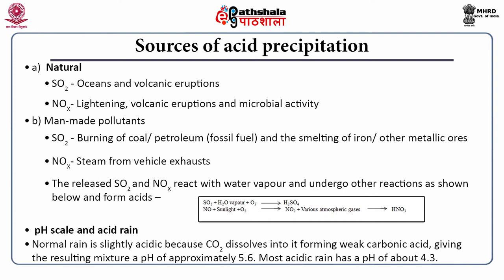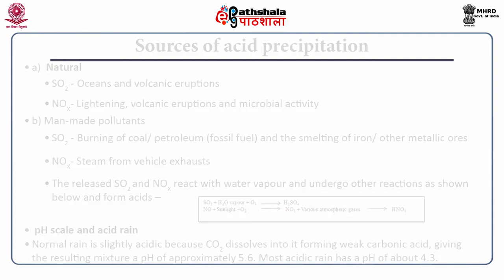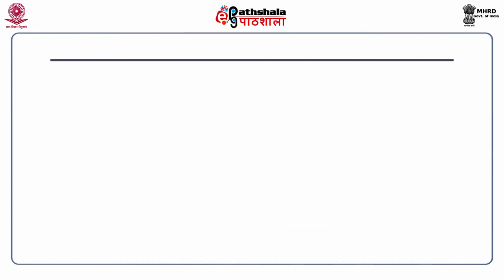Normal rain is slightly acidic because carbon dioxide dissolves into it, forming weak carbonic acid, giving a resulting pH of approximately 5.6. Acid rain has a pH of about 4.3, or below 5.6.